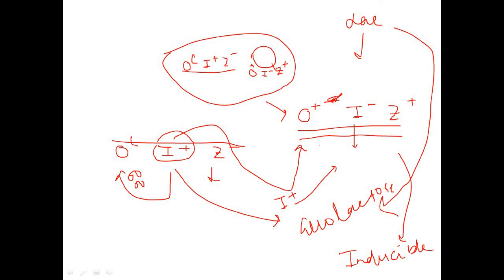When P2 was alone, I- meant no repressor was produced, so RNA polymerase could bind freely. But in the merodiploid state, the other DNA molecule contains I+, so the repressor is produced and binds to the O+ operator, preventing expression. Therefore, only when lactose is added to the medium will allolactose modify the repressor, allowing expression of beta-galactosidase.